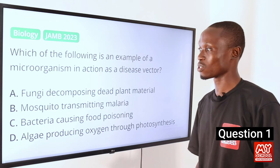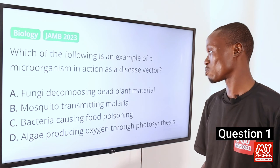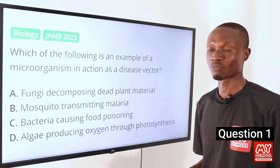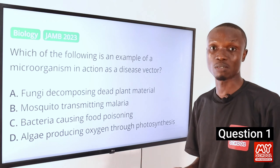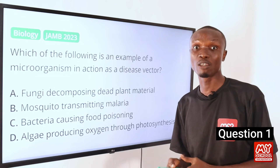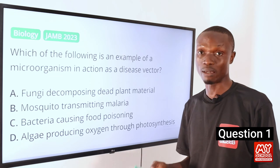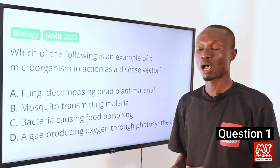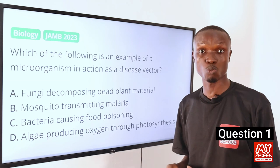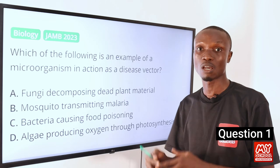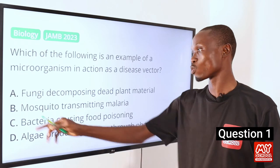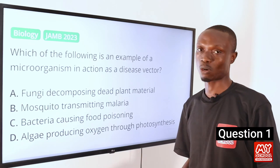The answer to this question is option B, mosquito transmitting malaria. We know that a mosquito is a vector, and a vector is an organism that carries a pathogen from one host to another. So when an infected mosquito bites a healthy person, it transfers its saliva containing the plasmodium parasite into the person's bloodstream, thus leading to the transmission of the disease.